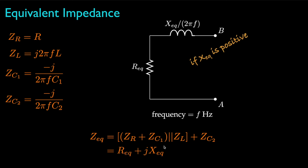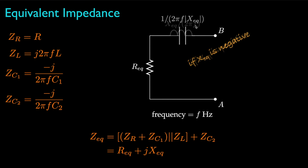If the reactance is positive, we can think of the equivalent circuit as a resistor in series with an inductor whose inductance is equal to the reactance divided by 2 times pi times the frequency. On the other hand, if the reactance is negative, we think of this as a resistor in series with a capacitor whose capacitance is equal to 1 over 2 times pi times the frequency times the absolute value for the reactance.